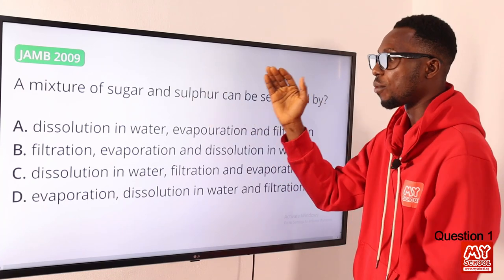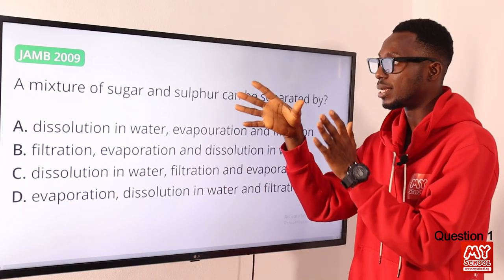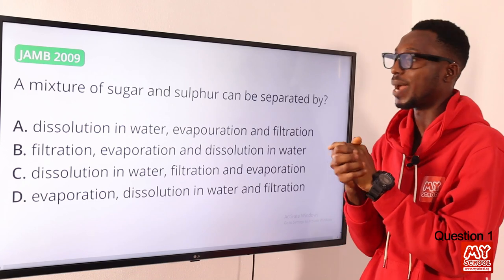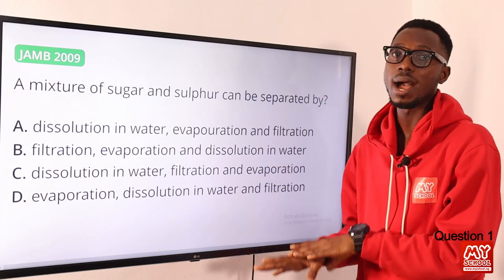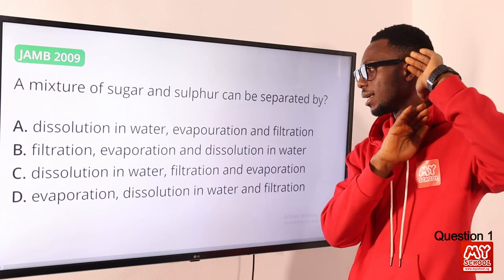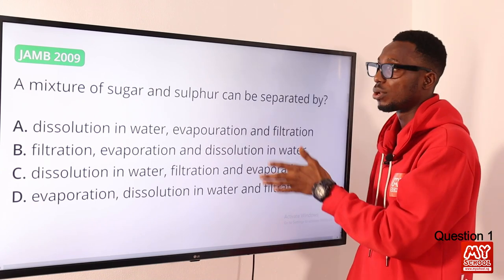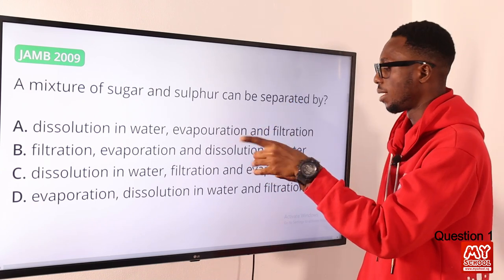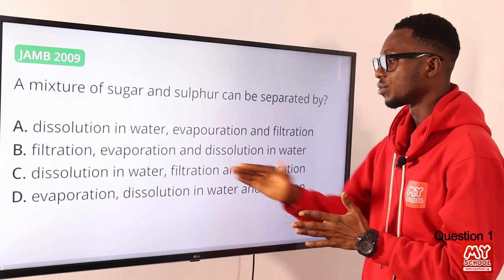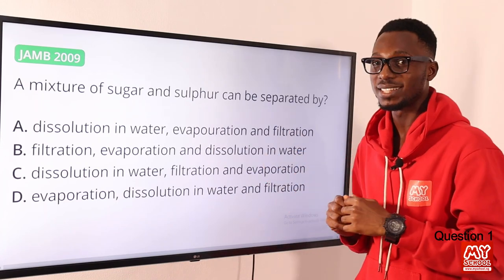To summarize: first, we dissolve sugar and sulfur in water (dissolution). Then in filtration, the sugar and water flow through the filter paper as the filtrate, while sulfur remains over as the residue. Inside the flask we have the solution of sugar and water. Then evaporation removes the water and leaves the sugar. This is the correct order of methods — option C is the right option.